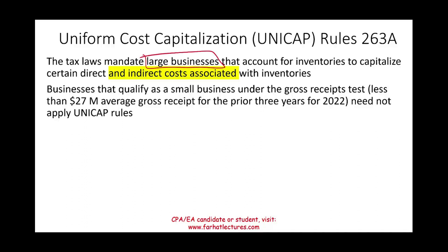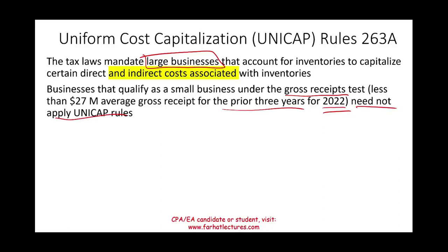Bear in mind these rules apply to large businesses. A small business is one that has gross receipts of less than $27 million on average for the past three years — and this number is for 2021, so for 2025 they may increase this average to $30 million. You look back three years prior to the year you are in, average your receipts, and if they are less than $27 million you are considered a small business. If so, the UNICAP rules do not apply to you.